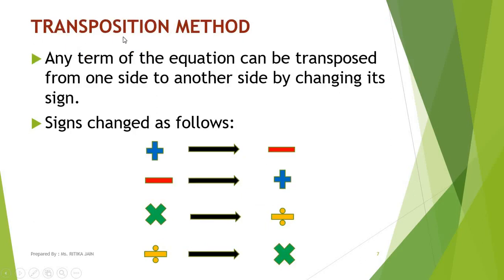Now let's come to a very important method — the transposition method. In this method, any term of the equation can be transposed from one side, say LHS, to the other side, RHS, or vice versa, by changing its sign. The sign changes are: plus becomes minus, minus becomes plus, multiplication becomes division, and division becomes multiplication.